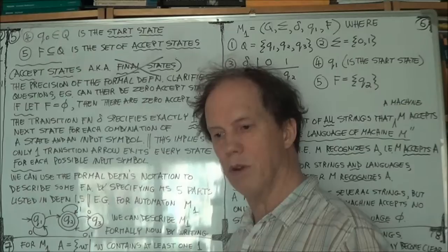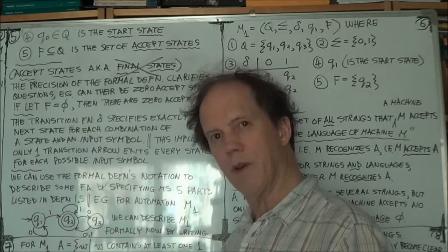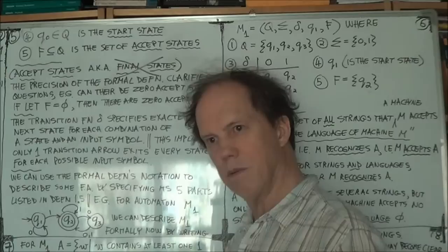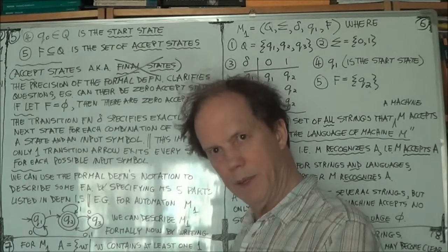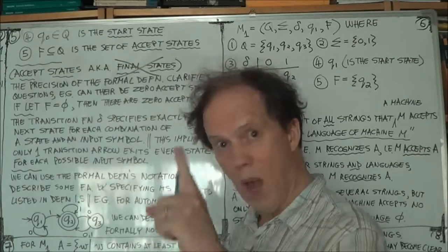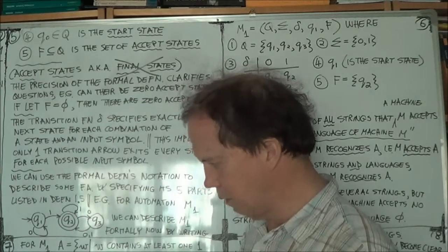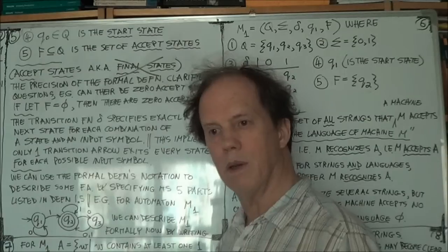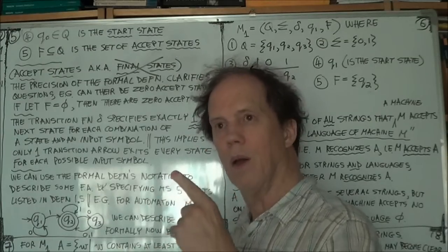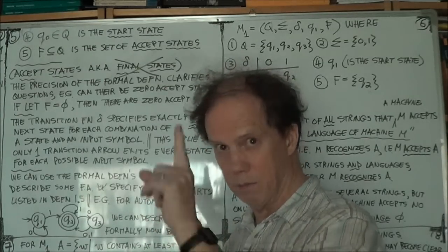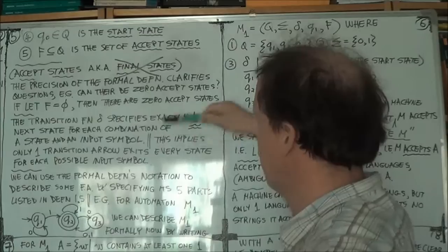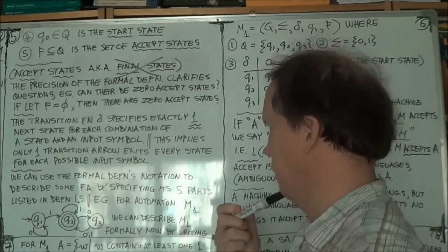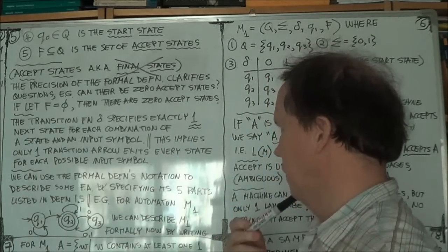That's the function. So your domain is the Cartesian product of Q cross sigma. So that maps ordered pairs into one element of Q. Hence, in other words, one next state, just one. So that's what I'm saying here.